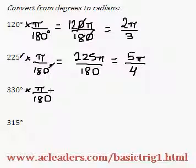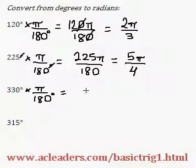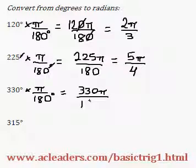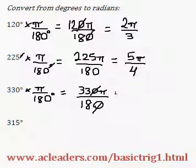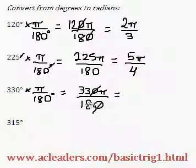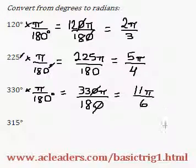330 degrees times pi over 180. We get 330 pi over 180 degrees. We can cancel these out, and then divide top and bottom by 3. And we get 11 pi over 6.